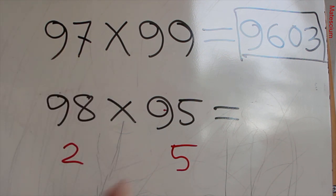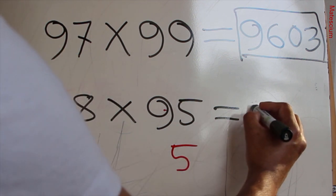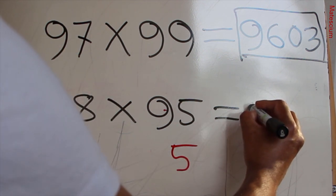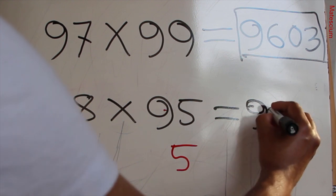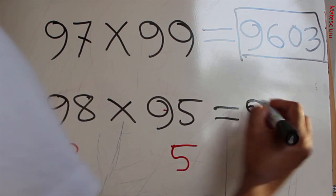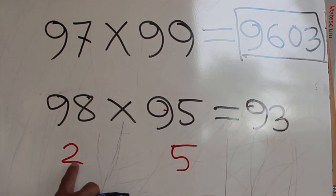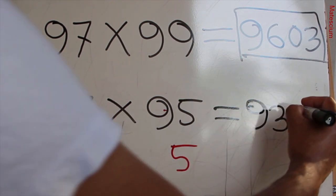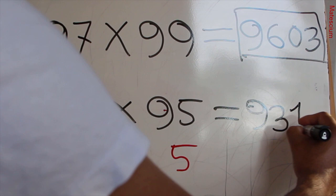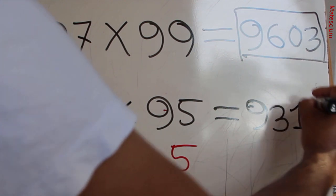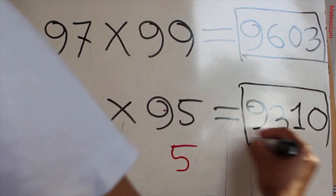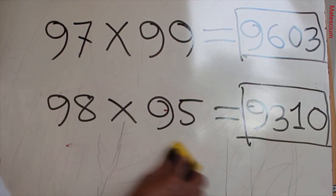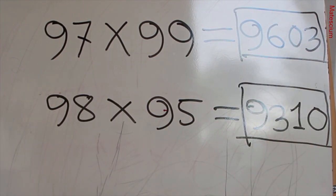That means 7 plus 93 is 100, so write 93 here. Then multiply 5 times 2, which is 10. Write 10 here — and this is the answer: 9310. Very simple!